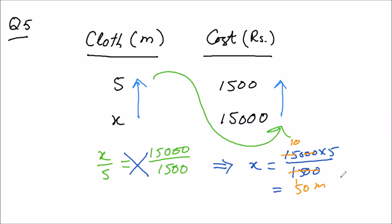So with 15,000 rupees we can get 50 meters of cloth. So this is the answer.